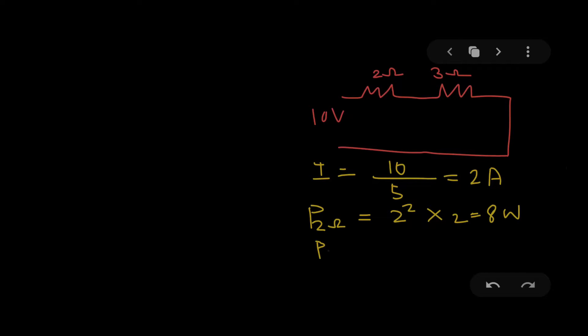To calculate P across 3Ω, I do the same thing — just multiply by 3 this time and it gives 12 watts. So with I²R we simply calculated the power dissipation across the 2Ω and 3Ω resistors.